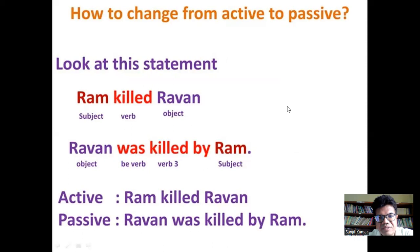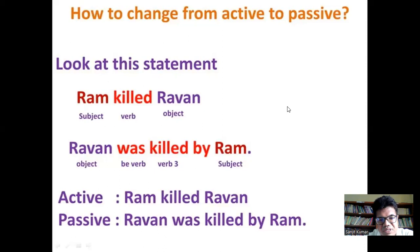How do we change from active to passive? In 'Ram killed Raven,' Ram is the subject, killed is the verb, and Raven is the object. In passive form, Raven — the object — comes into the place of subject; 'was' is an auxiliary verb; 'killed' is the past participle form of the verb kill; and we have the preposition 'by' with Ram, which has moved to the object position.